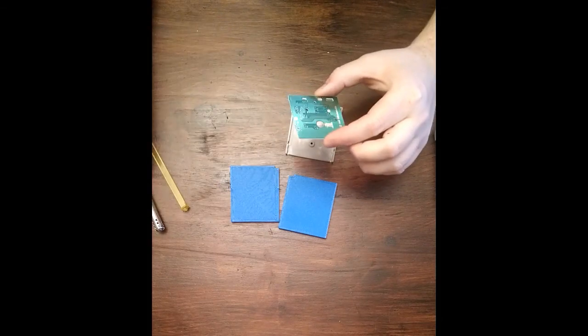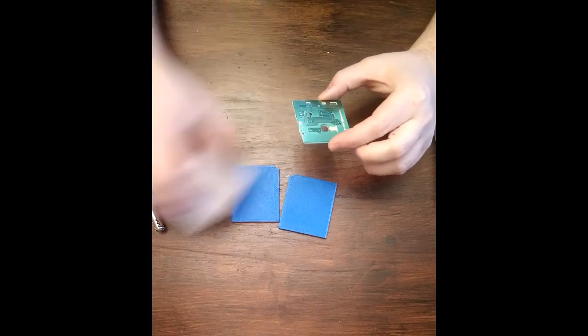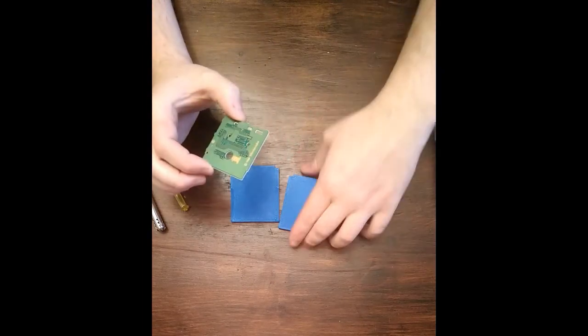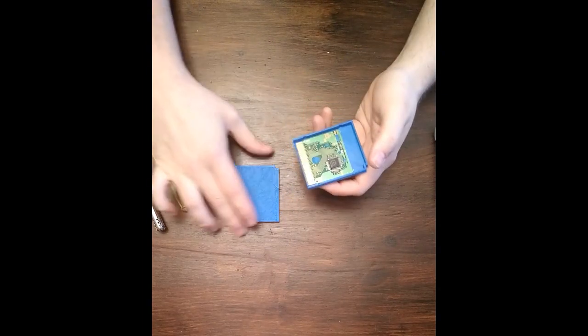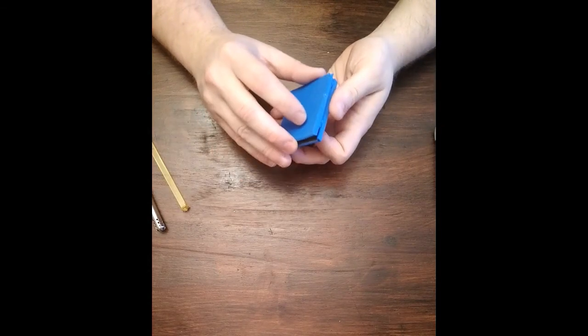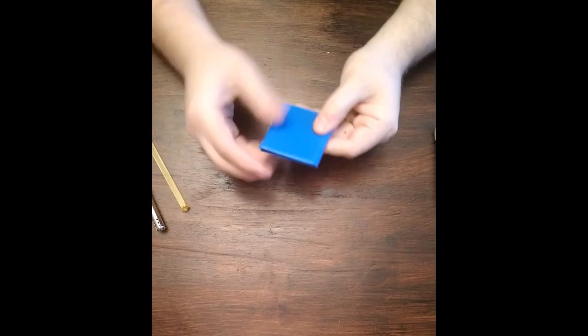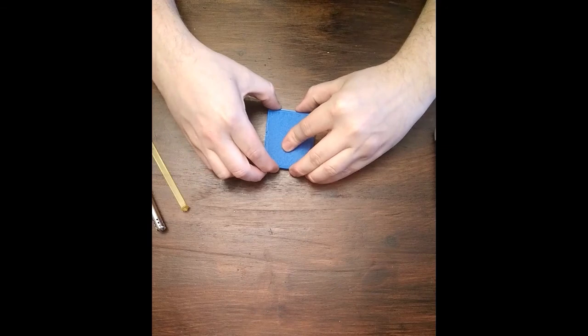So we go ahead and remove the PCB, and then on the new shell, you can see that there's already a bump or a nub so that the PCB will line up properly when the two halves are put together. Then they simply slide together, no screw to hold them together, and snap.